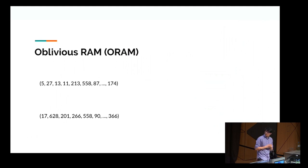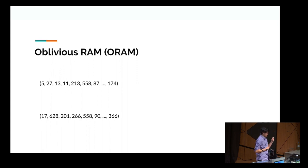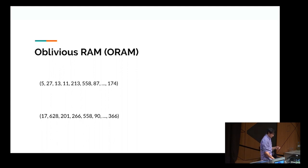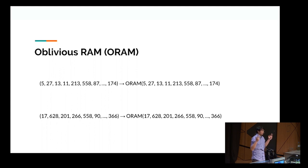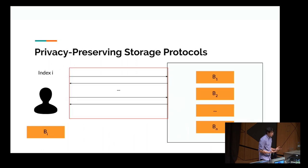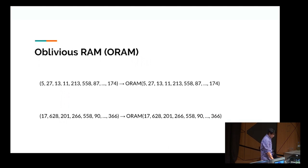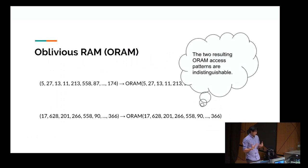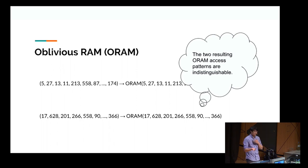More formally, what is an Oblivious RAM? Consider two sequences of access patterns — the top sequence is accesses to block 5, block 27, block 13, and the bottom is the same thing but they differ in many locations. What an ORAM does is takes these accesses and compiles them into private or oblivious accesses using this red box: it takes an access for index i and creates sequences of accesses which are private. For privacy, the two resulting ORAM access patterns are indistinguishable. You can get both computational and statistical security, and both have appeared in literature.